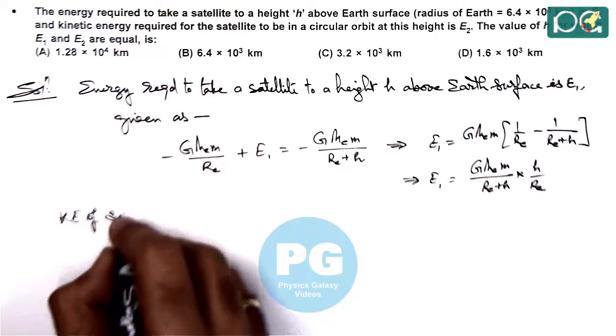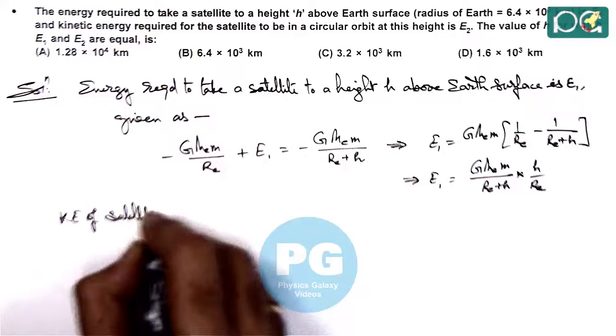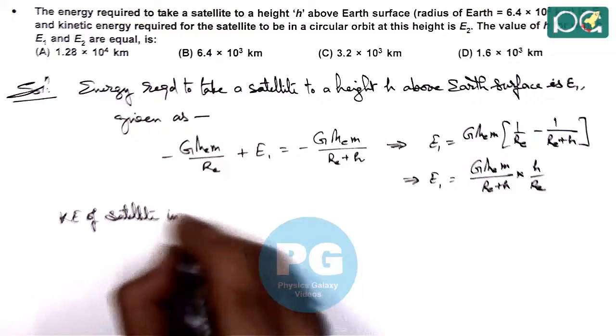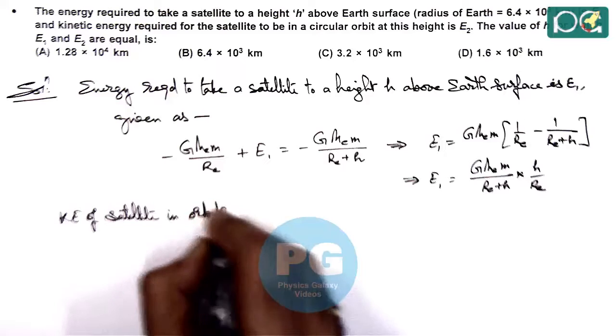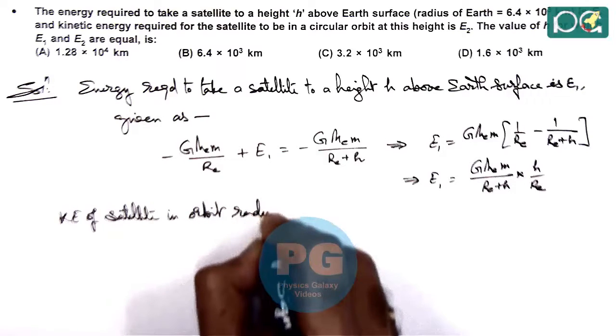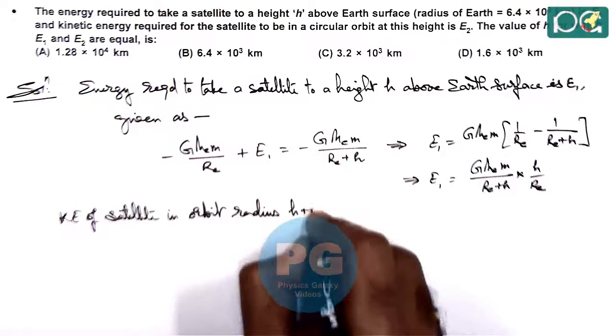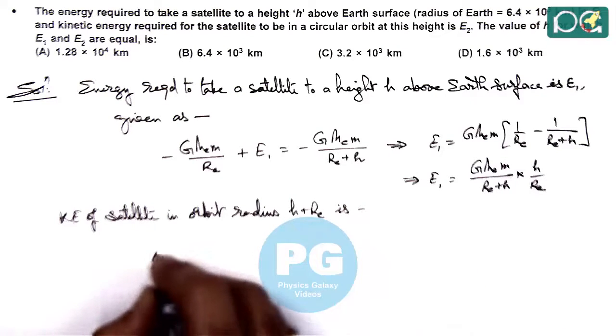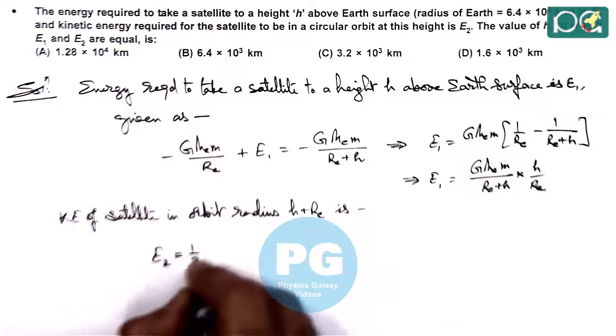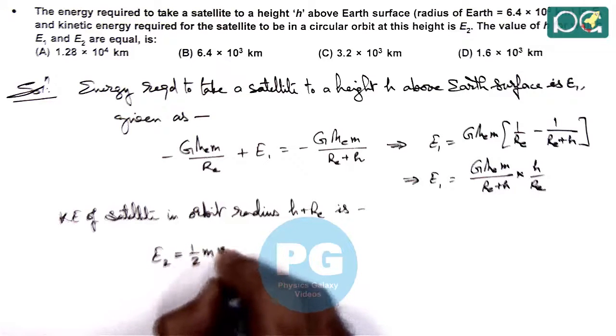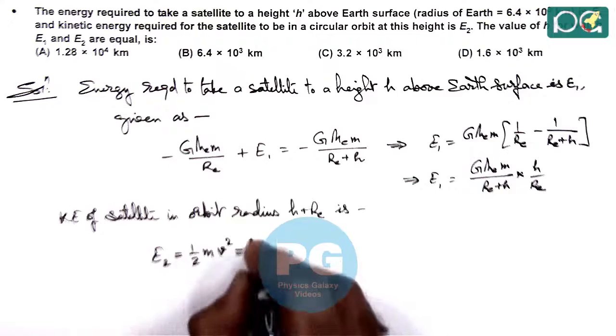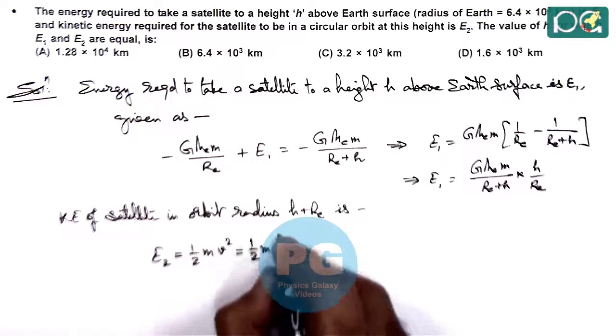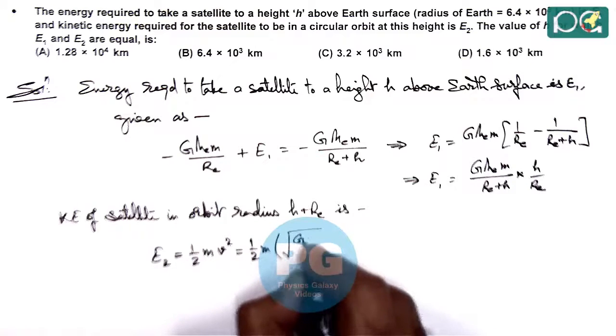And if we calculate the kinetic energy of a satellite in orbit radius H plus Re, this kinetic energy E2 we can write as half mv² where orbital speed is root of (GmE/(Re+H)) whole squared.